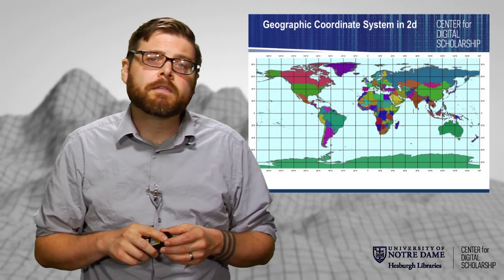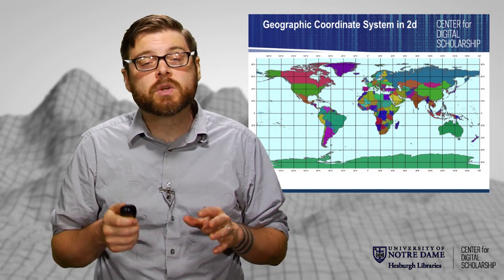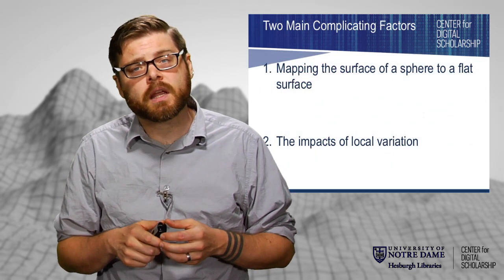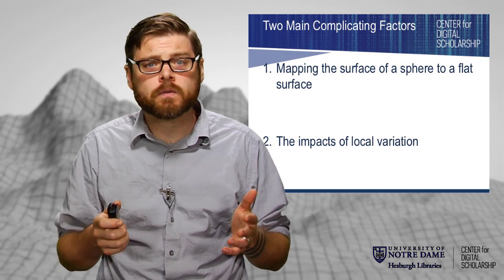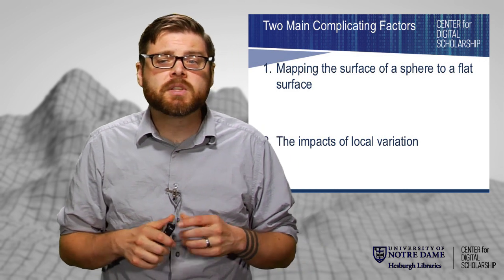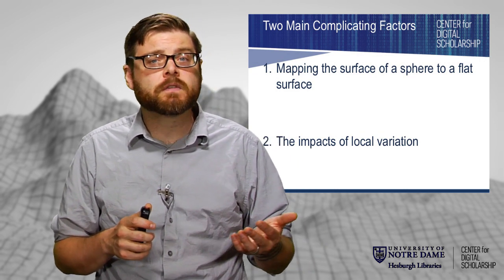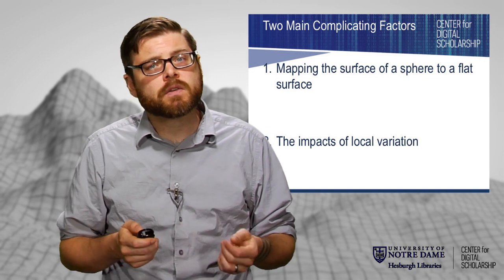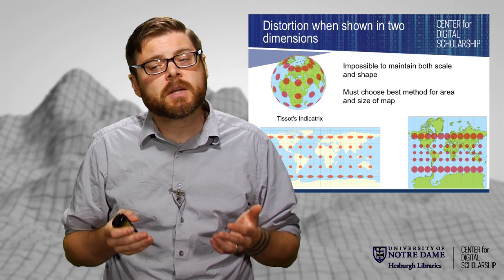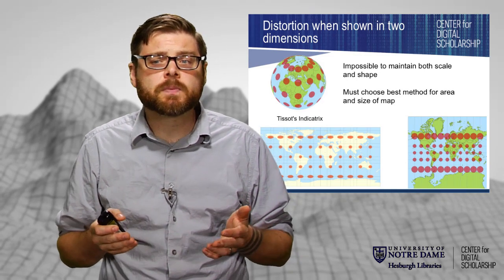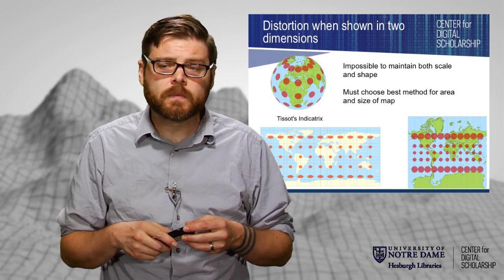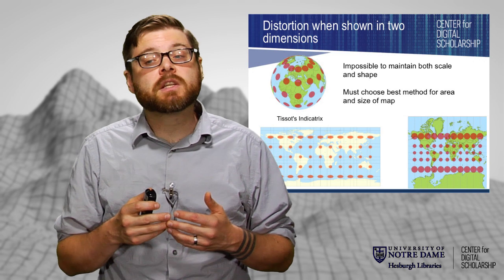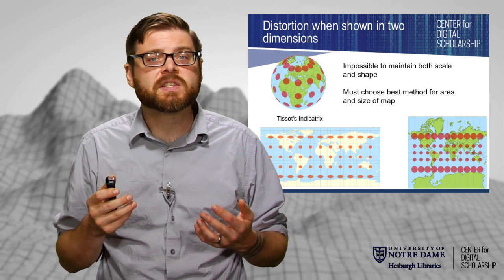When we take a geographic coordinate system and flatten it out, the system we use is important. It becomes one of two major complicating factors in doing digital mapping and creating paper maps. These two things are: it's very hard to map the surface of a sphere to a flat surface, and there are impacts of local variation. There always is distortion when you take something spherical and try to flatten it — it's impossible to maintain both shape and scale. Something's going to be distorted, and we end up needing to choose the best method depending on the size and nature of the map we're creating.